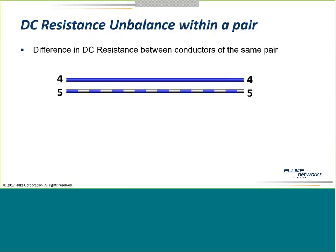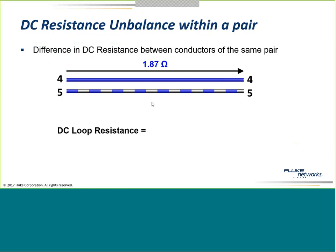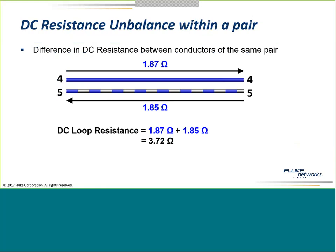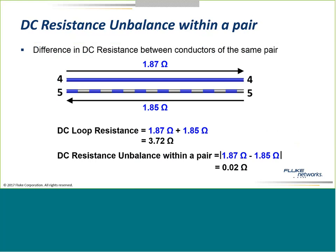What is resistance unbalance? First, let's look at what loop resistance is. We've got two conductors within a pair. The resistance of one leg of the pair plus the resistance of the second leg gives us the loop resistance — expressed in ohms. The higher the value, the more resistance, the more signal loss, the more effort needed for transmission. The resistance unbalance is the difference in those two values — we want the resistance for each leg of the pair to be similar.